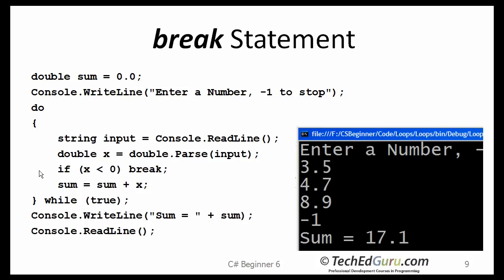Then every time I get that double value from the user, I check whether it is negative or not, whether it is less than 0 or not. If it is less than 0, then I break out of the loop.